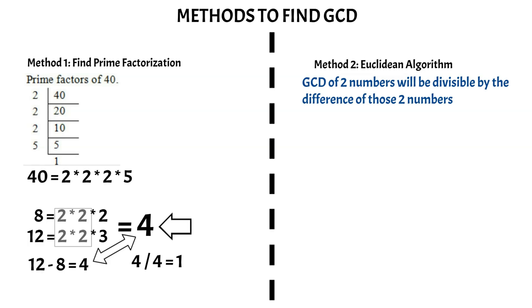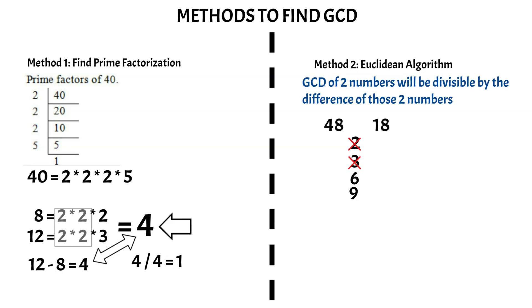Now let us use an example to see the different steps for finding GCD using the Euclidean algorithm. We want to find the GCD of 48 and 18. First, let's do a mental calculation: 2 is divisible by both — 18 ÷ 2 = 9 and 48 ÷ 2 = 24, but that's probably not the GCD. With 3: 18 ÷ 3 = 6 and 48 ÷ 3 = 16. With 6: 18 ÷ 6 = 3 and 48 ÷ 6 = 8 — this seems like the GCD. With 9: 48 cannot be divided by 9 without a remainder, so 9 is not the answer. So 6 should be the GCD between these two numbers.